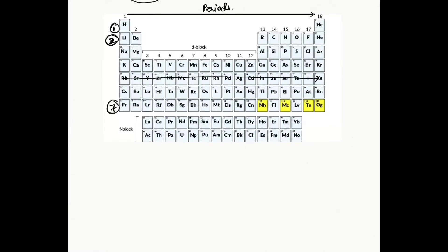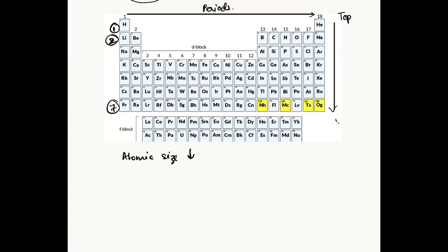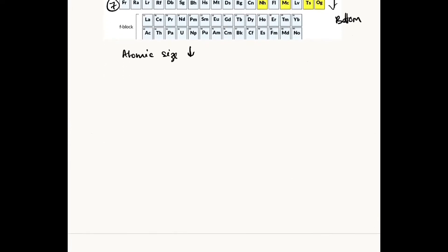What is the trend — the change in the atomic radius — as we go down these eighteen groups? As we go from left to right, you would see that the atomic size keeps on decreasing, and as you go from the top to the bottom, the atomic size actually increases.